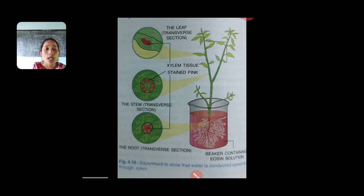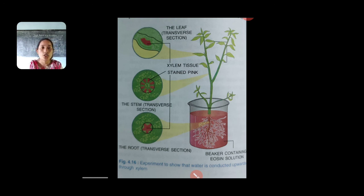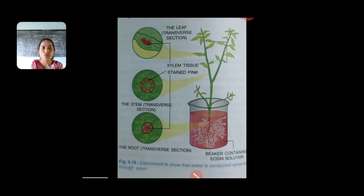This is a simple experiment. They will generally ask you to reason out why only xylem turns pink in color, what experiment is being discussed, and what the aim of the experiment is. Those are the types of questions asked from experiment-based questions. They will ask what process we are trying to understand, and the reason why only xylem is colored while the rest are not pink.